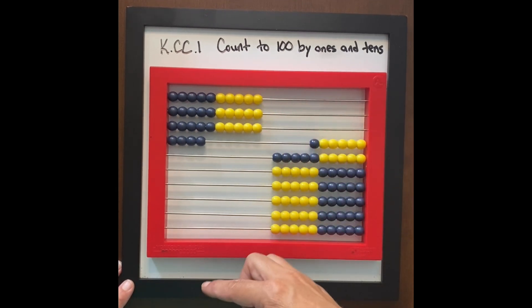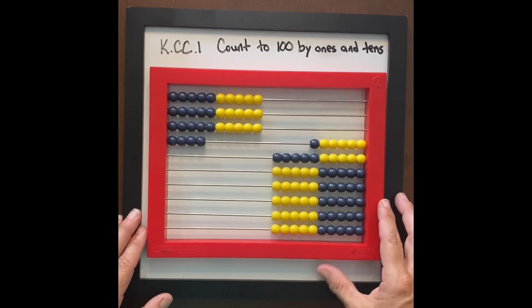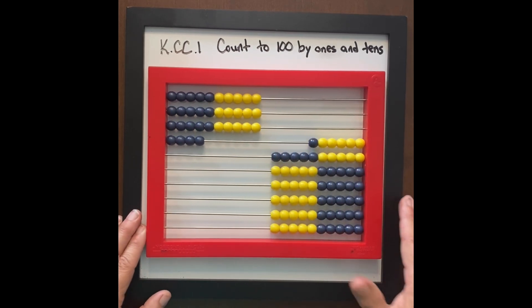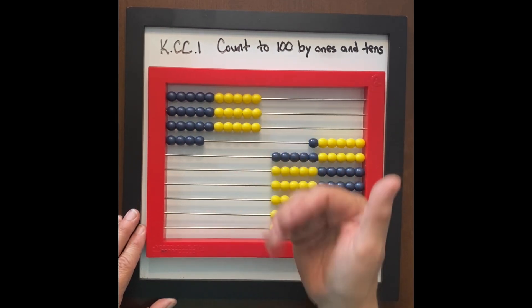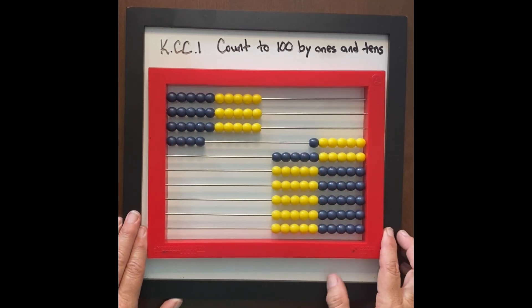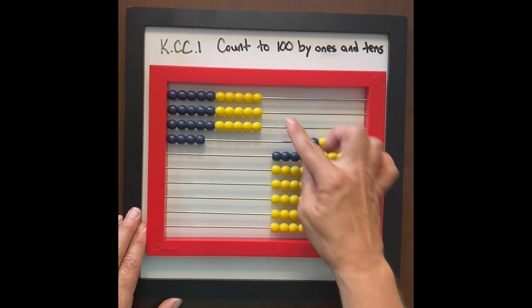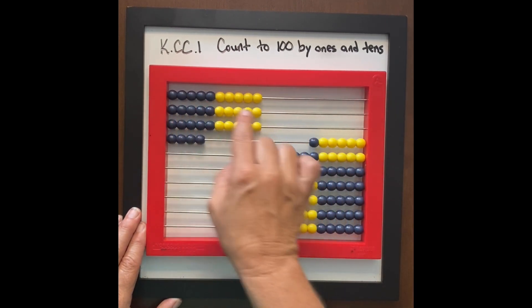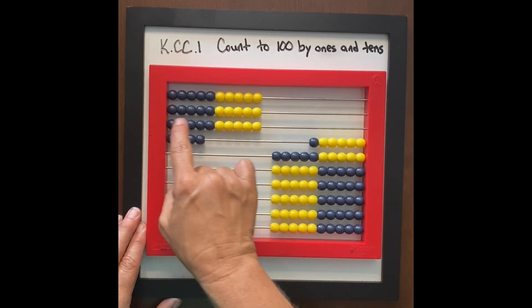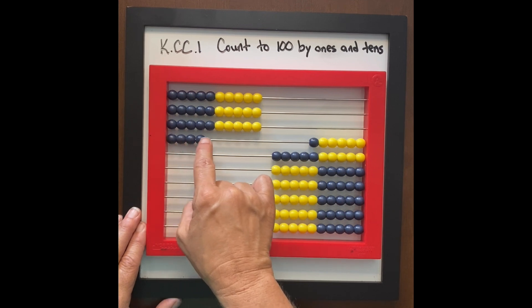Have them write their number and ask, tell me why that number is. If someone says 34, why is that 34? Let's make sure that's 34: 10, 20, 30, 31, 32, 33, 34.